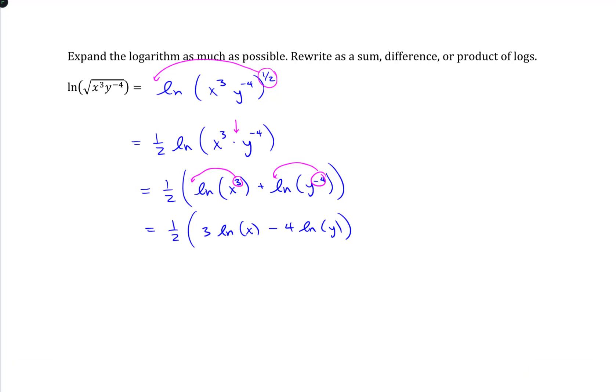And then this one-half on the outside, I can distribute that in and make this instead three-halves natural log of x, and then one-half times negative four would just be minus two natural log of y.